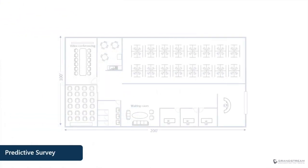There are multiple ways of running a site survey, and in this video I will focus on predictive site survey, which is more convenient when designing a wireless network without having to be on site. The first step in the predictive site survey is to study the floor plan or blueprint of the location to gather information such as facility layout and area size.